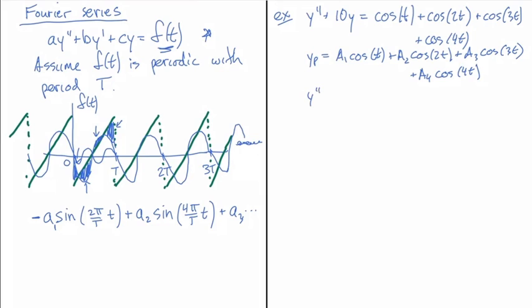if you had y double prime plus 10y equal cosine omega t, we got a general result there that the coefficient would depend on omega. And that would be 1 over omega naught squared, which in this case is going to be 10 minus omega squared.